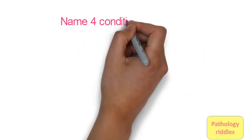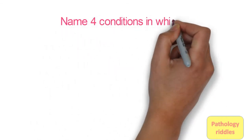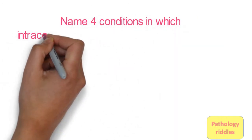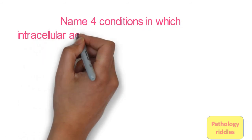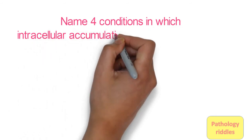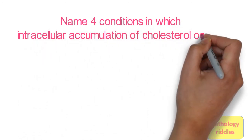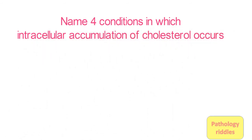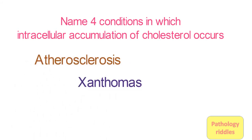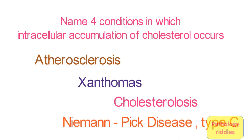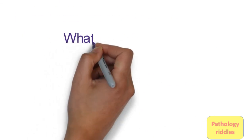Question 6: Name 4 conditions in which intracellular accumulation of cholesterol occurs. The answer is: atherosclerosis, xanthomas, cholesterolosis, and Niemann-Pick disease type C.